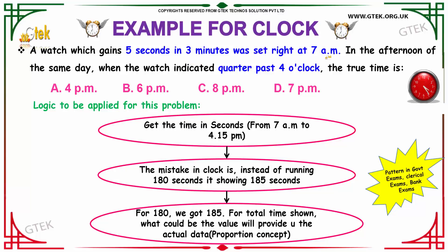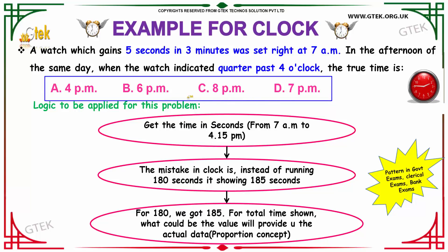A clock was set right at 7 a.m. In the afternoon of the same day, when the watch is noticed it is showing a time of quarter past four o'clock. What will be the original time? That is what we have to calculate. The options are: 4 p.m., 6 p.m., 8 p.m., and 7 p.m.